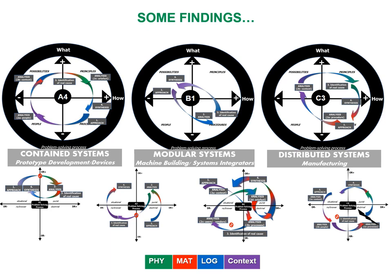What emerges from the research is that successful problem solvers recognize the different disciplines and aspects of the problem, and use explicit code-shifting techniques. They engage in practices in all four quadrants and shift consciously between them. The technical language they use changes depending on the context — whether it's for a report, a verbal update to their managers, or a discussion between colleagues on a production line, for example.